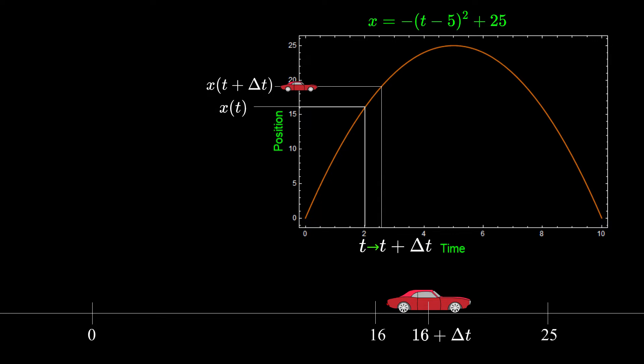So we have the position at the time t plus delta t minus the position at time t, which is our distance interval and we divide it with the time at t plus delta t minus t. So we get this expression for the average velocity at this small interval.